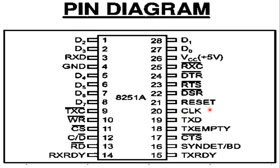Pin number 21 is the reset signal. A high on this input resets the 8251 and forces it into the idle mode. Pin number 20 is the clock signal, which is the clock input usually connected to the system clock. This clock does not control either the transmission or reception rate. The clock is necessary for communication with the microprocessor.